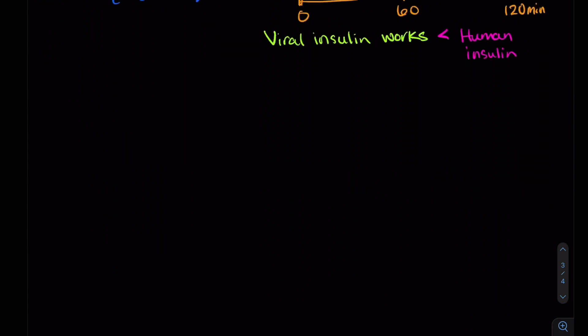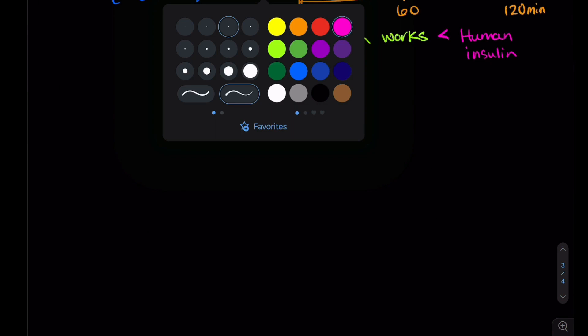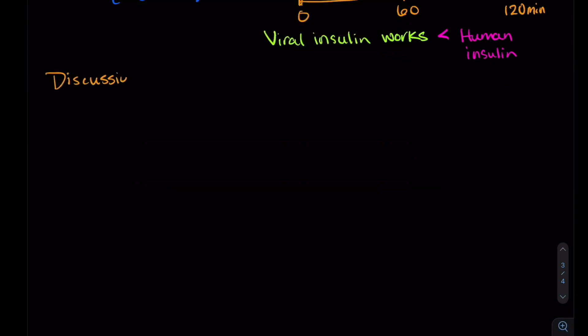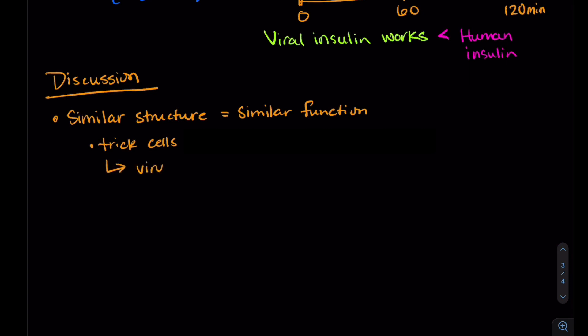So what does this mean? So basically what they found is that this viral insulin had a similar structure to human insulin, which means it had a similar function. Basically it could trick cells into getting more energy. What that means is that it might be possible for our viruses to infect and reproduce faster because they have more energy in the cells.